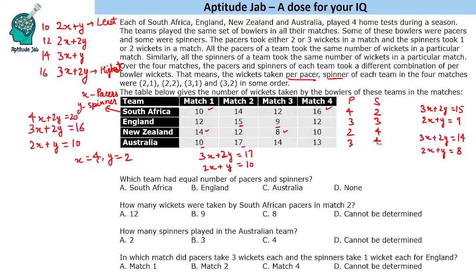We can now find the number of pacers and spinners for each team. Putting these values, we can find the other combinations as well. For the 3-1 combination with South Africa: 9 + 4 = 13. However, for England, both the 2-2 and 3-1 combinations give 12 wickets, so we cannot determine those two cases for England.